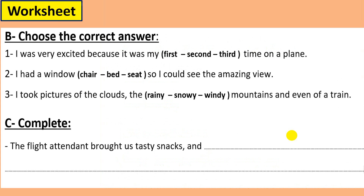Now let's continue to complete the sentences from the given options. I will read them for you first. Number one: I was very excited because it was my first time on a plane. Number two: I had a window seat so I could see an amazing view. Number three: I took pictures of the clouds, the snowy mountains, and even a train. The answers are: first, window seat, and pictures of clouds.